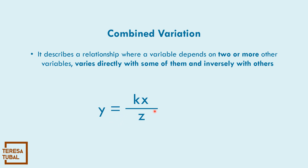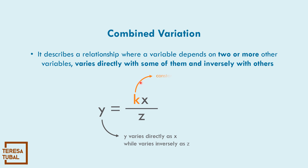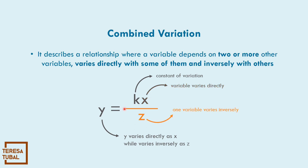The basic formula is y equals kx over z. This is read as: y varies directly as x and inversely as z. Here, k is the constant of variation, x is the variable that varies directly, while z is the variable that varies inversely.